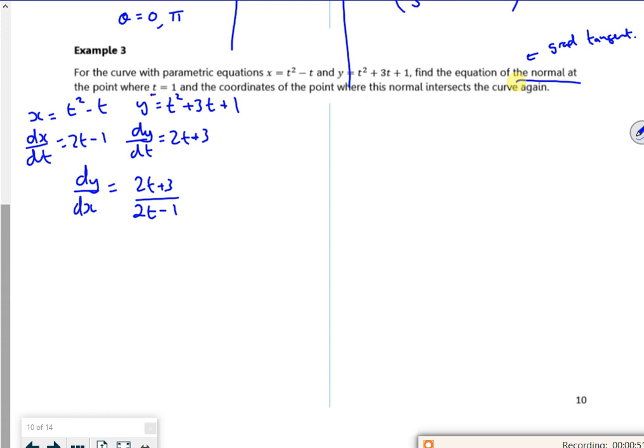Right then, so I want it when t is 1. So for t is 1, dy by dx is 2 lots of 1 plus 3, which is 5, 2 lots of 1 minus 1, which is 1, so it's just 5. Remember that's a tangent.